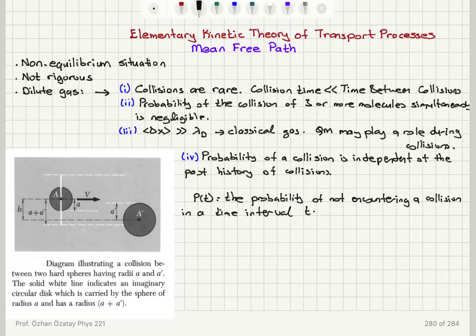Now we call the mean time between successive collisions the mean free time. So we have two definitions here. First, the mean time tau between successive collisions is called the mean free time.